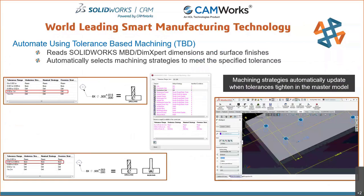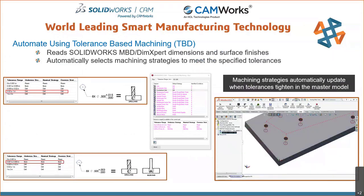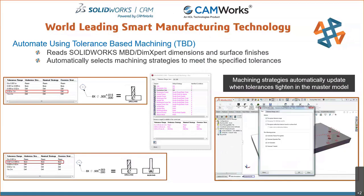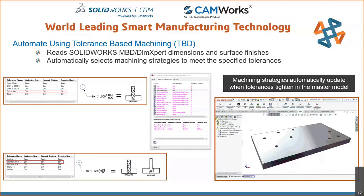We can also take advantage of tolerance-based machining, where we can machine to the mean. For example, with holes, it recognizes whether to do a drill versus a bore versus a ream based on the tolerances that are set. So we take full advantage of tolerance-based machining.